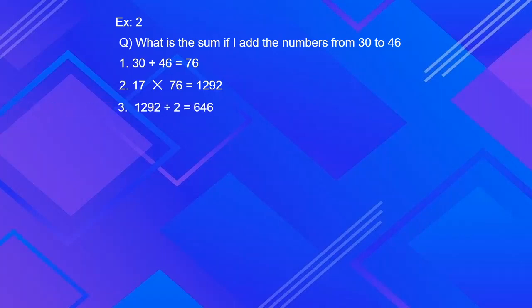Third step is to divide by 2. So 1292 divided by 2 is 646. So the sum of the numbers from 30 to 46 is 646.